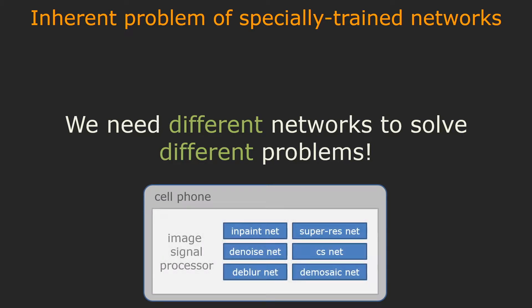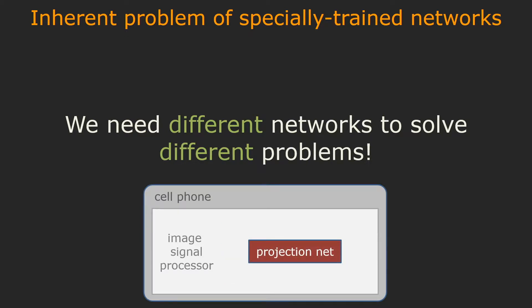Cell phone cameras need to deal with a variety of image processing problems, from image inpainting to demosaicing. To achieve this, we propose a framework that can use a single network to solve any linear inverse problem. This can significantly reduce the cost and complexity of the image signal processor.